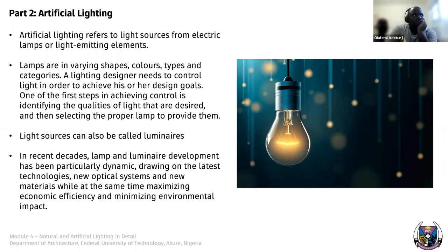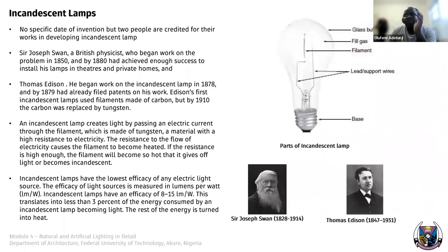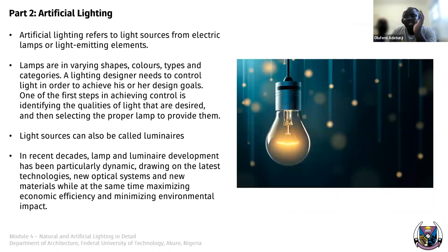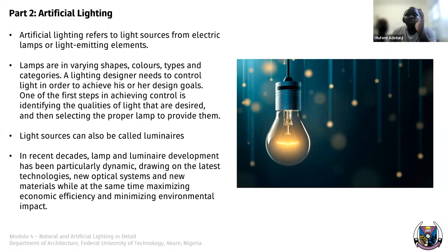Moving over to Part 2 on artificial lighting. Artificial lighting refers to light sources from electric plants or light-emitting elements. Lamps are available in various shapes, colours, types and categories. Please listen carefully to this section — it is very, very important. You will be assessed on it, and a lot of the modules going forward will focus on this aspect.